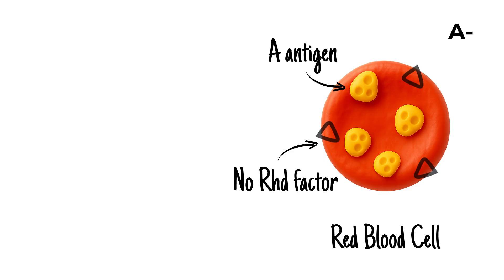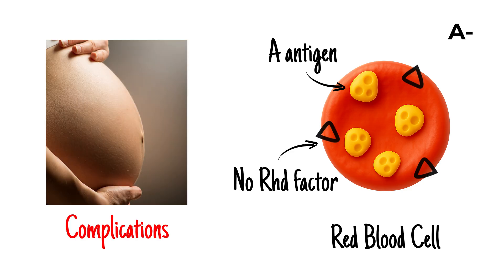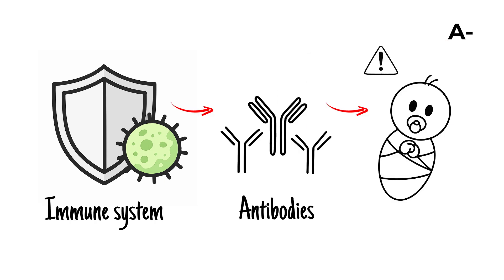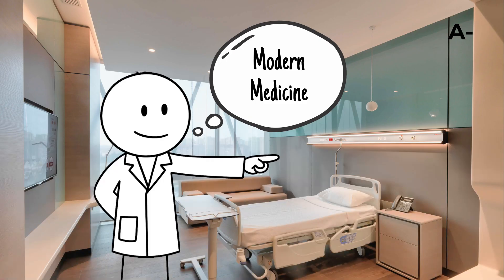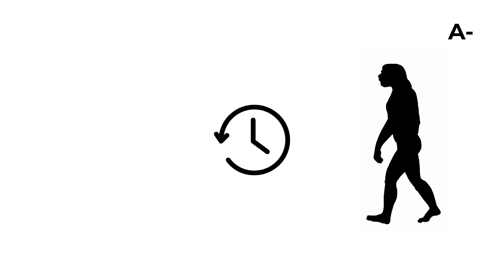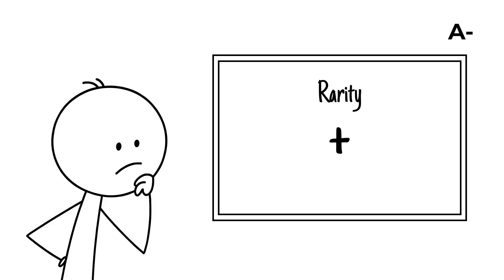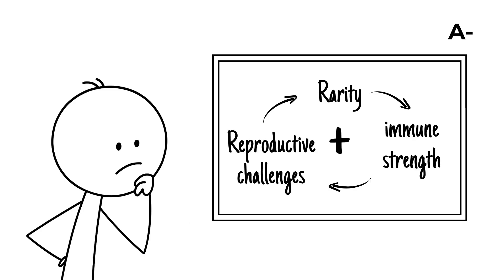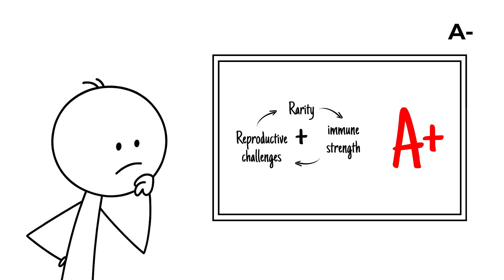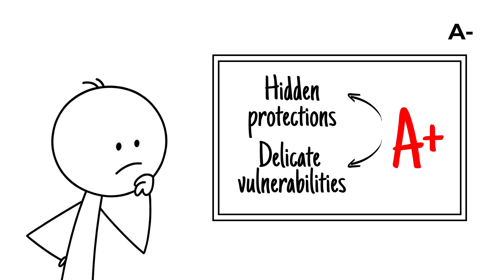However, the absence of the Rh D factor creates complications during pregnancy. If an A negative mother carries an Rh positive baby, her immune system may produce antibodies that can harm the child's red blood cells. Modern medicine manages this with preventive treatment, but in earlier times it likely affected survival and reproduction. The mix of rarity, immune strength and reproductive challenges makes A negative a blood type defined by both hidden protections and delicate vulnerabilities.